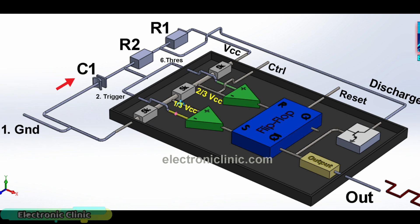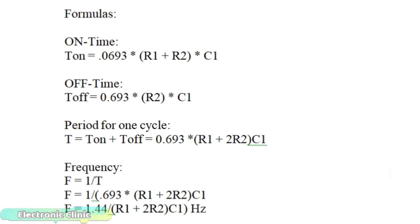Now for the low output. When capacitor C1 is charged enough that the voltage at the trigger pin is greater than one-third of VCC, the output of the second comparator will be 0 and the output of the first comparator will be 1. Q-bar outputs 1 which turns on the transistor and connects the discharge pin to ground. Capacitor C1 then discharges. The voltage reduces, the comparators' outputs change, and this keeps the 555 timer IC output low. Same value resistors will give the same duty cycle. Changing the values of R1 and R2, the on-time and off-time can be adjusted. You can use the provided formulas for calculating the on-time, off-time, and period of one complete cycle.